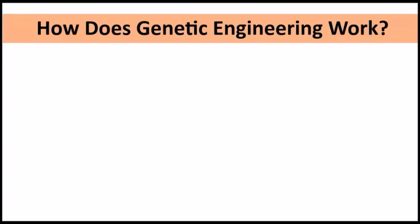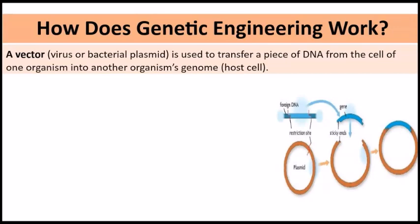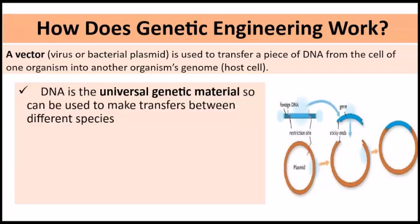So how does genetic engineering actually work? Scientists utilize a vector, which is simply a virus or bacterial plasmid — that is, genetic material from microorganisms — that is used to transfer a piece of DNA from the cell of one organism into another organism's genome, which would be the whole cell. Remember that DNA is the universal genetic material, deoxyribonucleic acid, and that is the universal genetic material that can be used to make transfers between different species. That is why with genetic engineering, we can have genetic material from one species being inserted into the cells of another species.